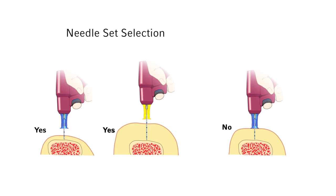If the needle set is inserted through the soft tissue and does not reach the bone, or the 5 mm mark is not visible above the skin with the tip of the needle set touching the bone, the needle set is too short. A longer needle set or alternate site should be chosen prior to penetration of the bone cortex.